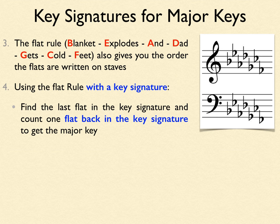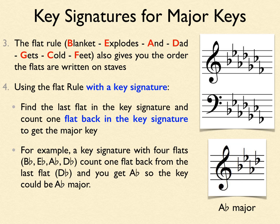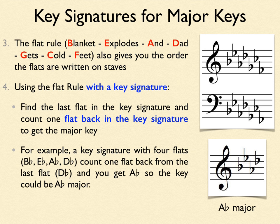For example, a key signature with four flats — B flat, E flat, A flat, and D flat. The last flat is D flat; count one flat back and you get A flat. So this could be the key signature of A flat major. Again, it could also be the relative minor — we won't know until we see the music that follows the key signature and time signature. You really need to know how to use both rules forwards and backwards before moving on to minor keys.